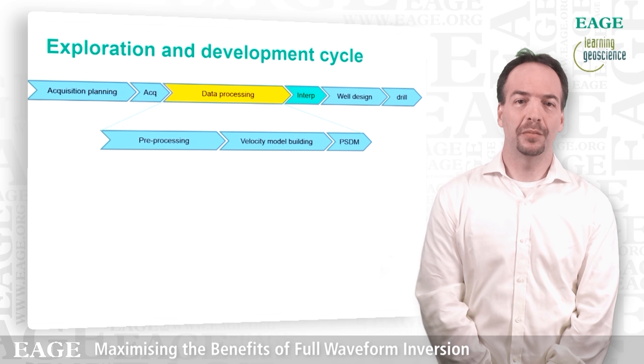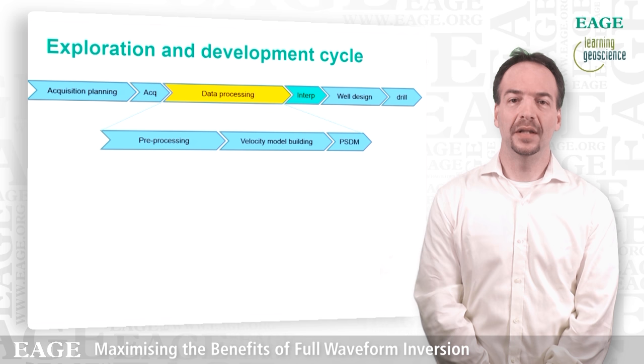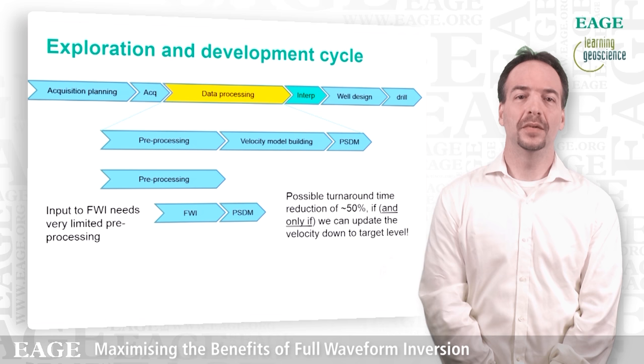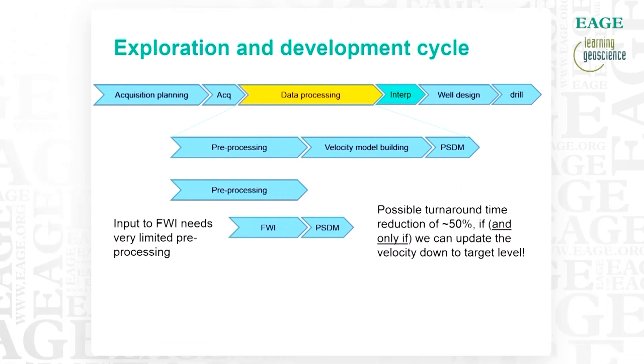We start with the pre-processing — we need to clean up the data before we can move to the velocity model building, because tomography needs clean data. Then we do our imaging. The idea is to get away from this sequential approach and parallelize the velocity model building with the pre-processing. The key point here is that FWI does not need very heavy pre-processing — in fact we can almost start from raw data. Our opinion is that we could shorten the whole processing part by about 50%.